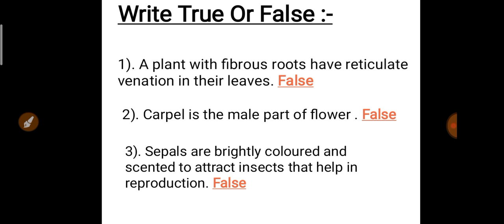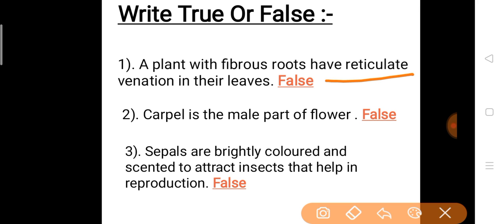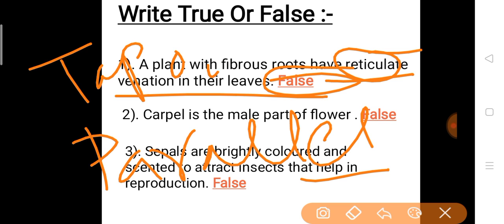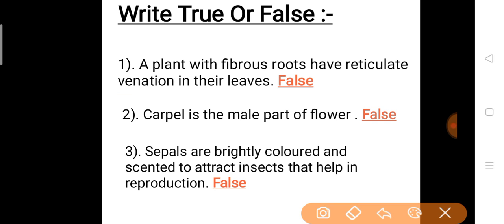Question 1: A plant with fibrous root has reticulate venation in their leaves. Plants with fibrous roots — do they have reticulate venation in their leaves? Answer is false. They have got parallel venation. Plants with fibrous roots have parallel venation, not reticulate. If you want reticulate venation, the root will be tap root.